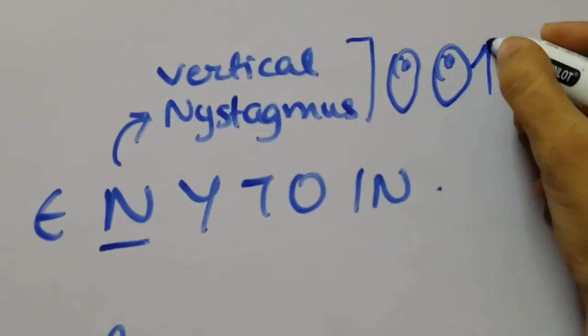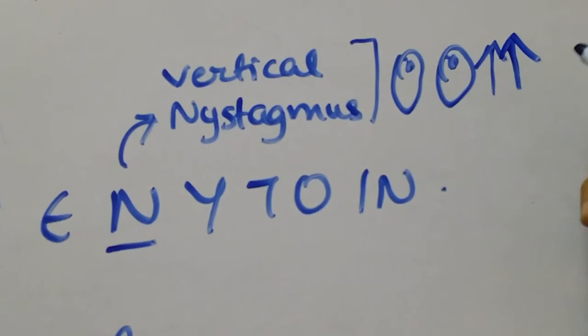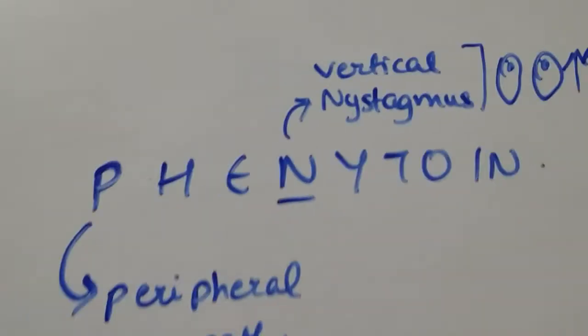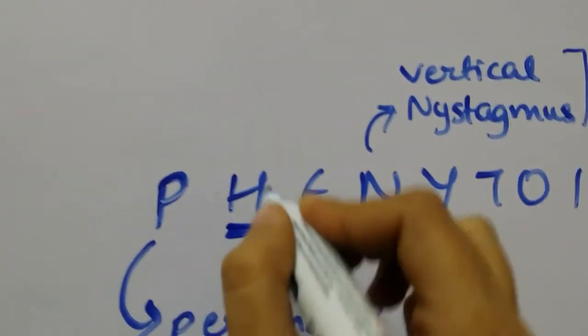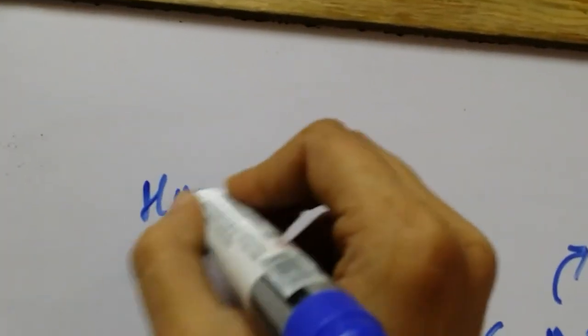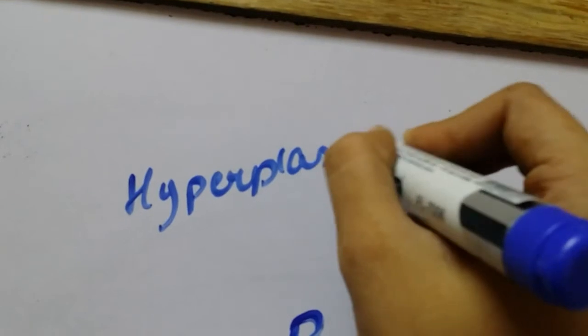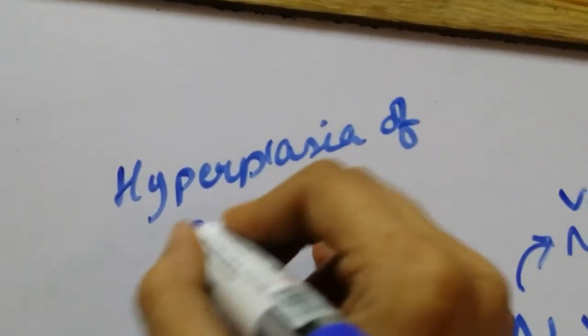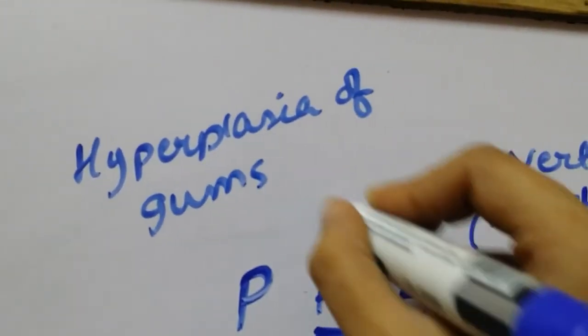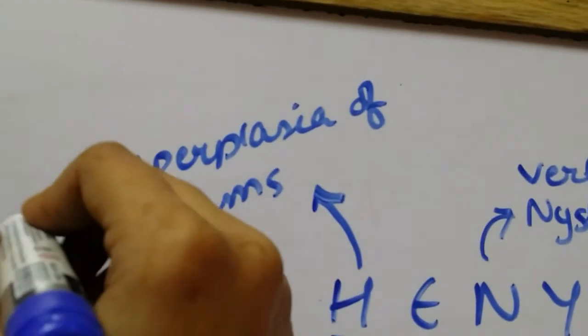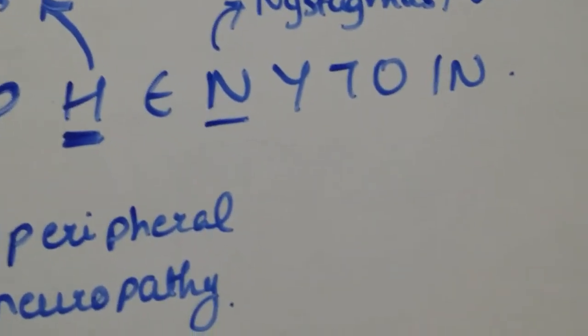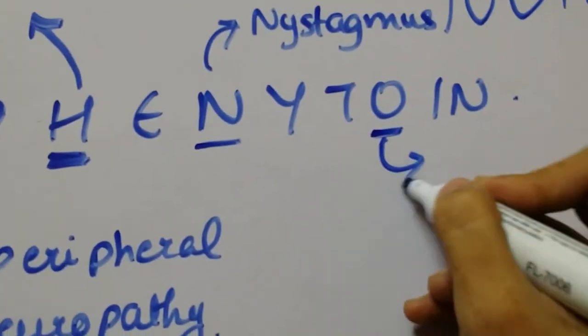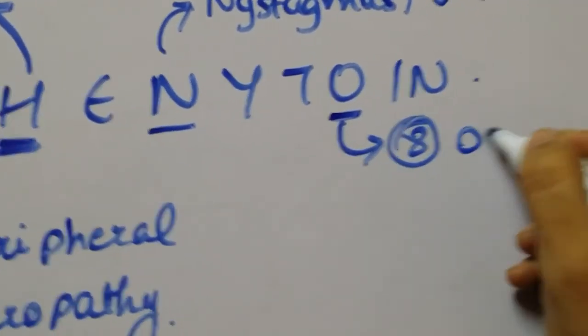How do you remember this? When your eyes look up, the phenytoin levels are up. So that's point number six. Point number seven is that it causes hyperplasia of the gums. I think everybody kind of knows that. The other drug that causes hyperplasia of the gums is calcium channel blockers. Point number eight: it can cause osteopenia of the bones.